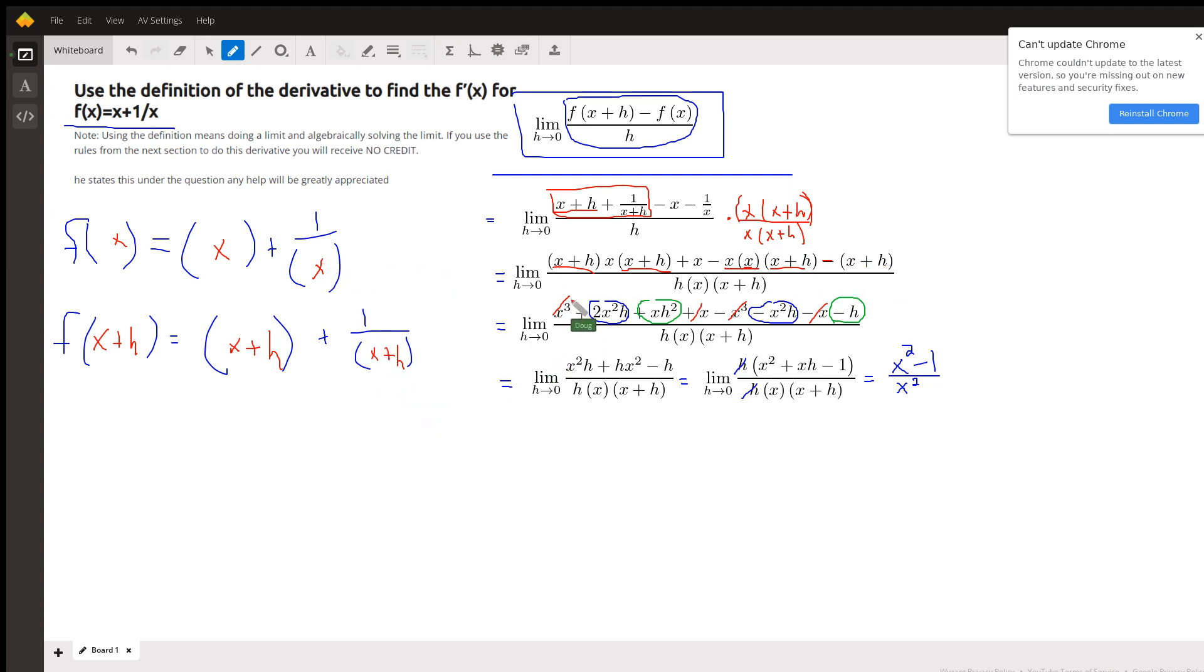Now, in red I've kind of indicated the terms that cancel out. Minus x cubed. The x and the minus x. In blue I've circled the similar terms. So 2x squared h minus x squared h gives us 1x squared h. I've got an xh squared in green and I've got a minus h.